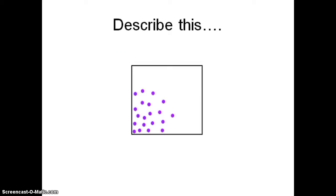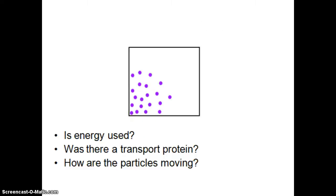If you were going to describe this particular box with concentrated particles moving out to this, how would you describe that? Pause the program and write down your thoughts about what kind of transport that would actually be, and why. The questions you want to ask yourself are: Is energy used to move this product? Are we using a transport protein? And how are the particles moving? Those are the three questions you should always ask yourself when trying to figure out how a molecule is moving.